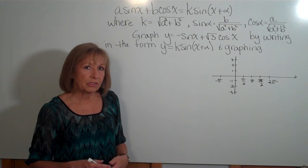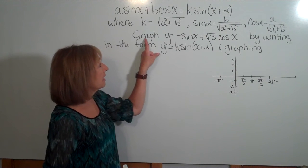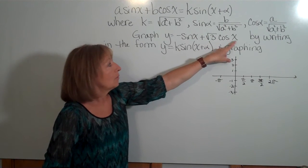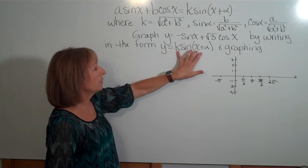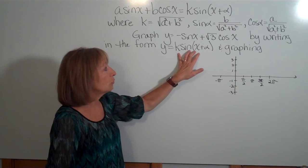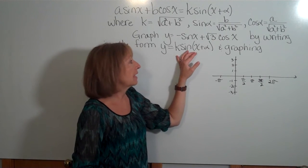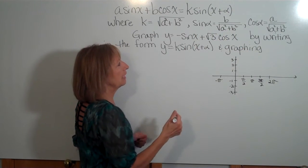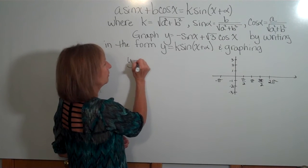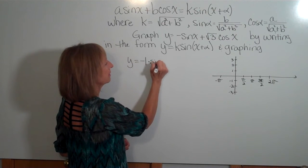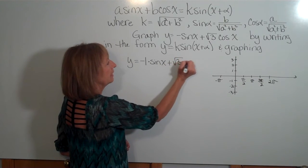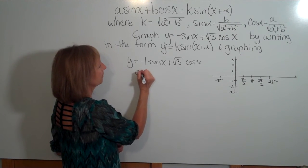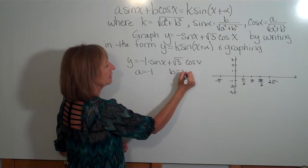We're not going to develop that derivation here — we'll just show an example. The problem says to graph y equals negative one times sine x plus the square root of three times cosine x by writing it in the form k times sine of (x plus alpha). So here my a is negative one and my b is the square root of three.